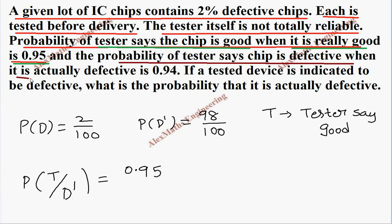Further reading the question, the probability of the tester says chip is defective when it is actually defective. It means P of it is defective but tester says defective is T dash. Let's write it here: T dash is tester says defective, and its probability is 0.94.